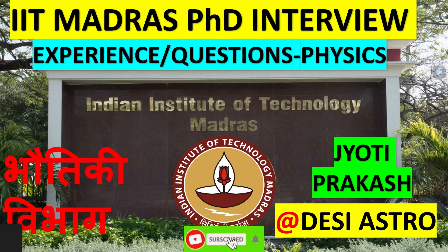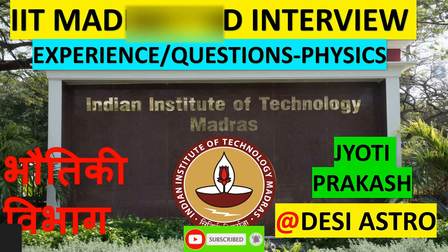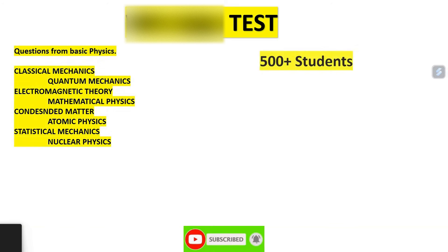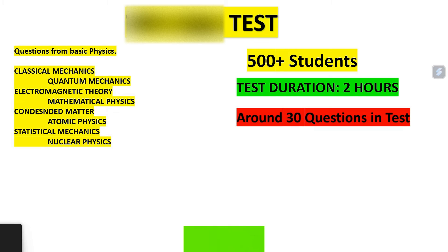IIT Madras interview consists of two rounds. The first round is a written test followed by an interview. In this test, almost 500 plus students were present and the duration was almost two hours. The number of questions was around 30, and all questions were multiple choice questions, some were integer type, and some required writing final expressions.